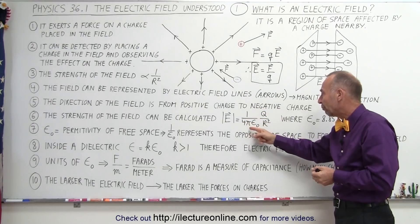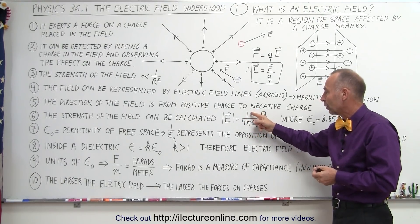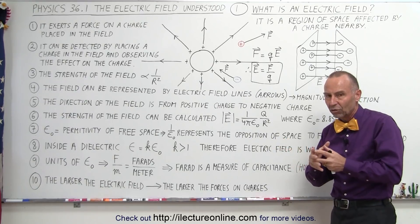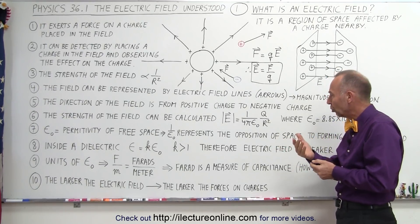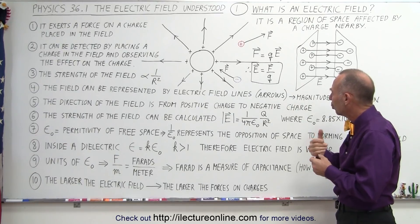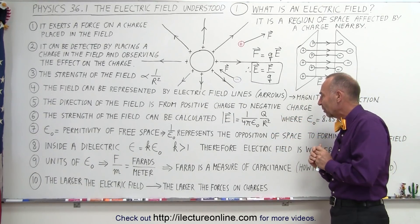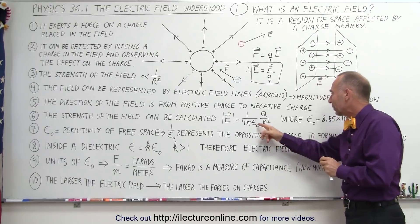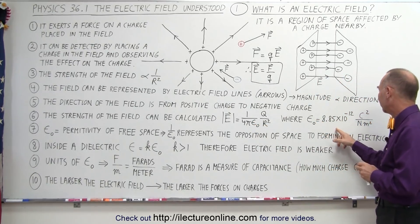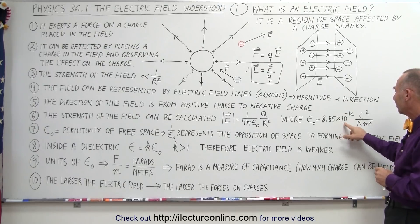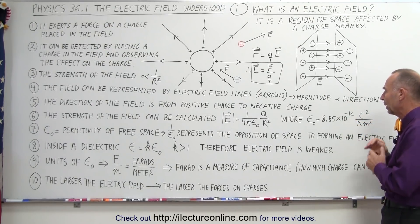The formula also includes 1 over 4 pi epsilon sub naught. Sometimes this fraction 1 over 4 pi epsilon sub naught is also called k, with k being 9 times 10 to the 9th newton meters squared per coulomb squared. We will talk about that in some later examples. Epsilon sub naught has the value by itself of 8.85 times 10 to the minus 12 coulombs squared per newton meters squared.